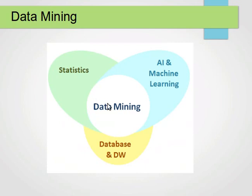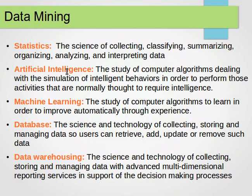Data mining is the overlap of statistics, database and data warehousing, AI, and machine learning. Statistics is the science of collecting, classifying, summarizing, organizing, analyzing, and interpreting data. AI is the study of computer algorithms dealing with the simulation of intelligent behaviors — in order to perform activities that are normally thought to require intelligence.